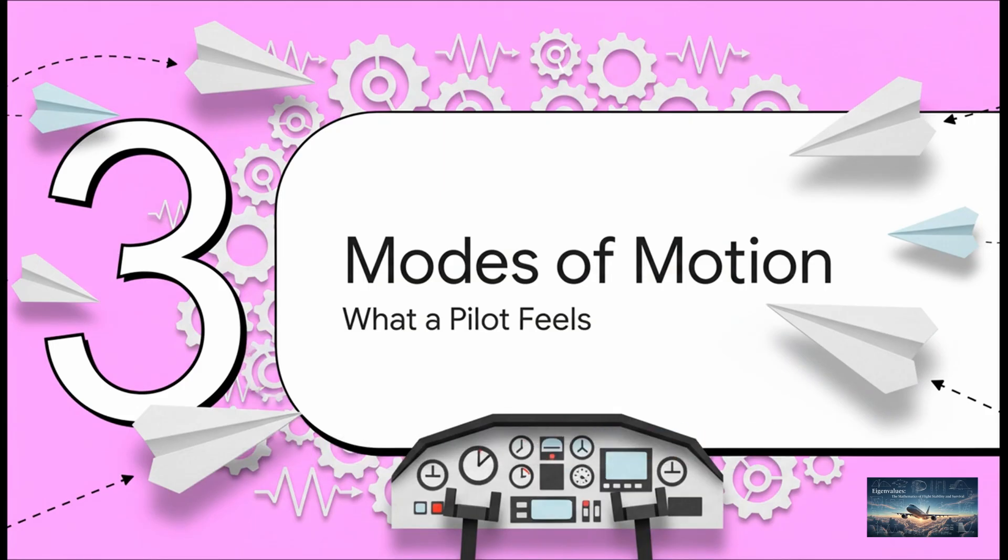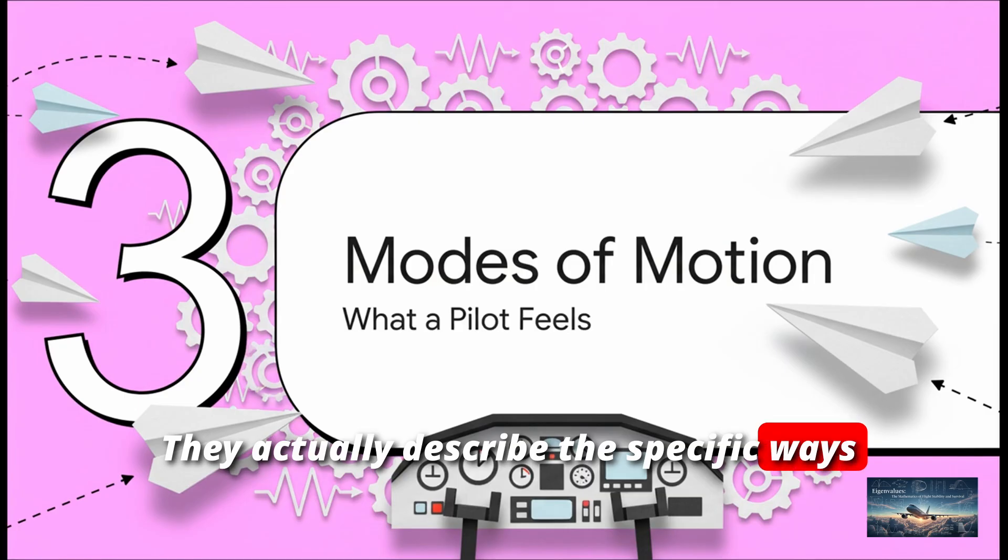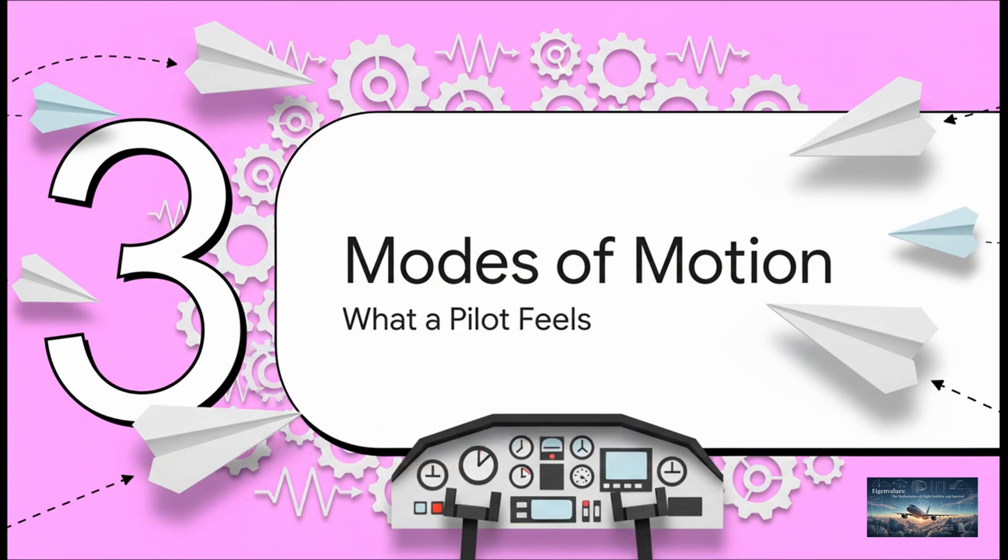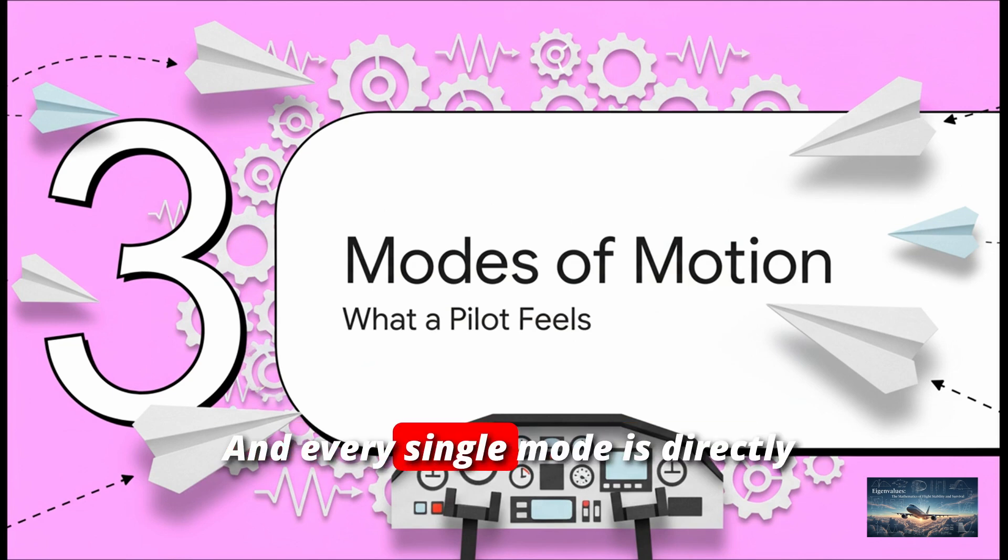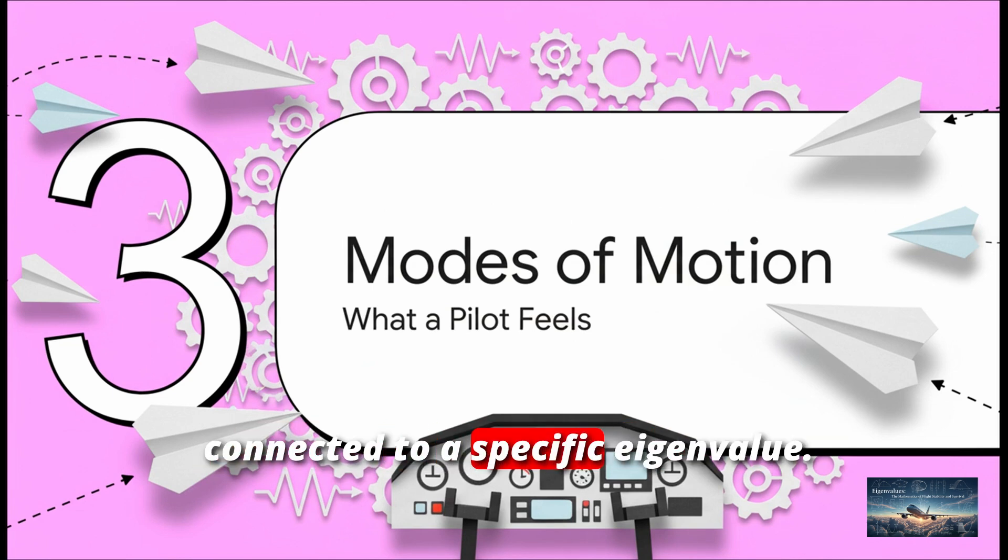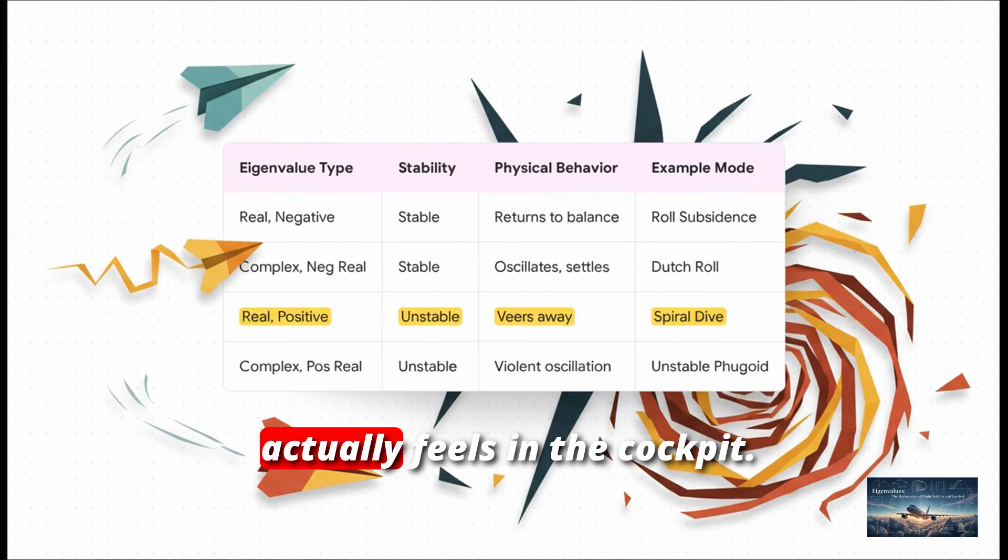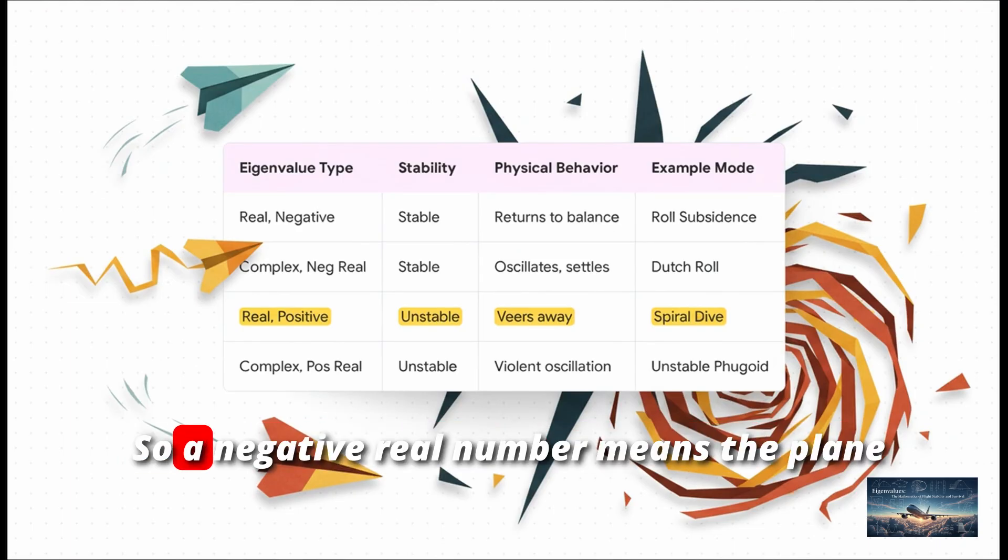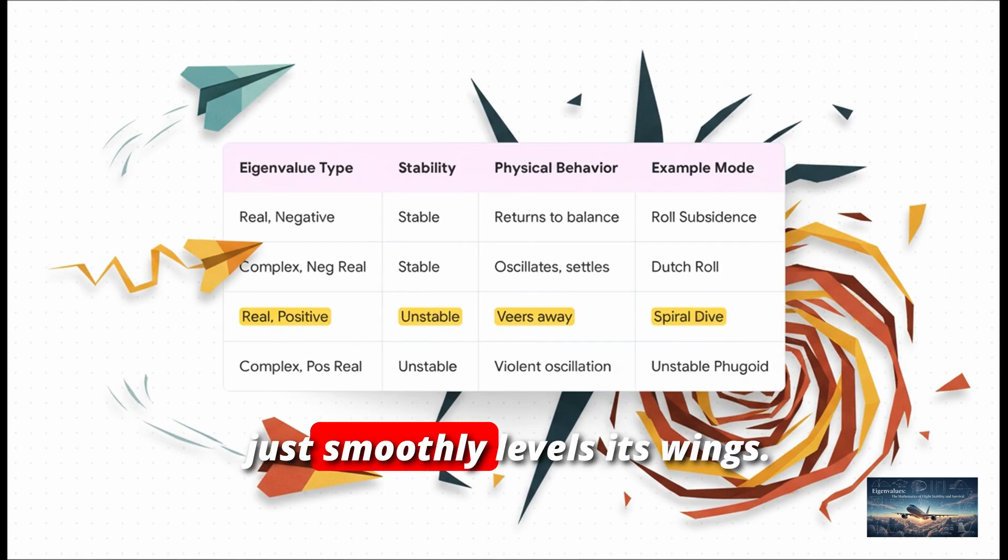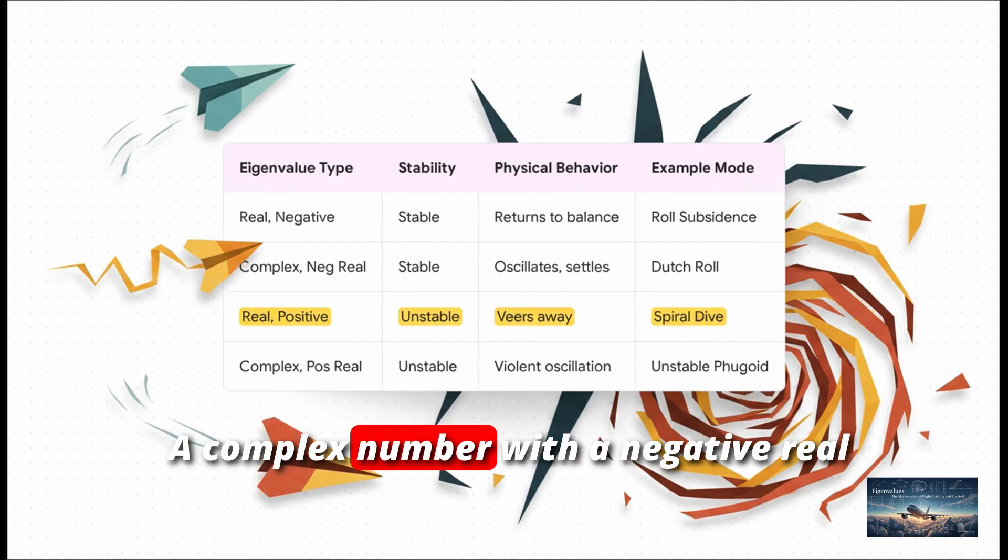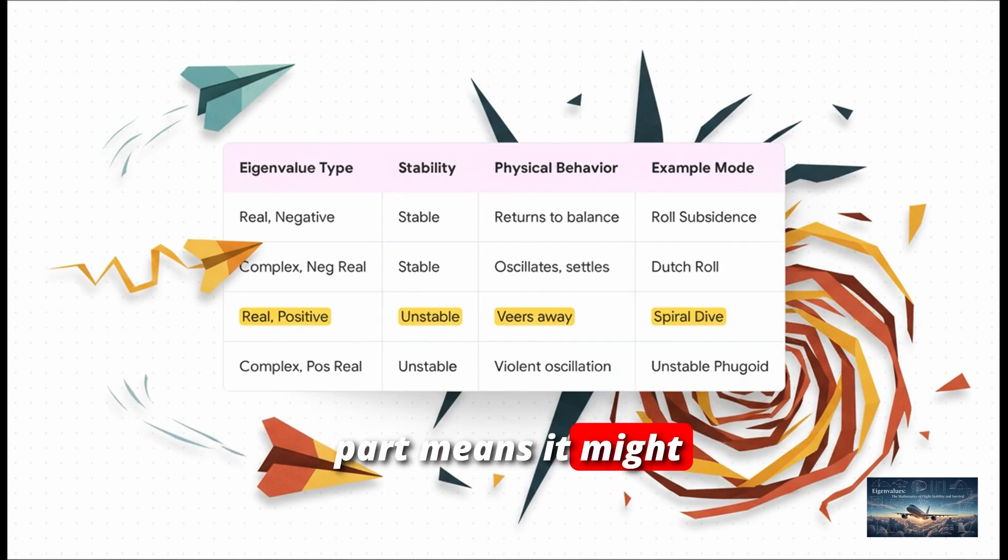What's really cool is that these eigenvalues do more than just give a thumbs up or thumbs down on stability. They actually describe the specific ways a plane moves through the air. You know, the feelings. Pilots and engineers call these modes of motion. And every single mode is directly connected to a specific eigenvalue. This table really connects the abstract math to what a pilot actually feels in the cockpit.